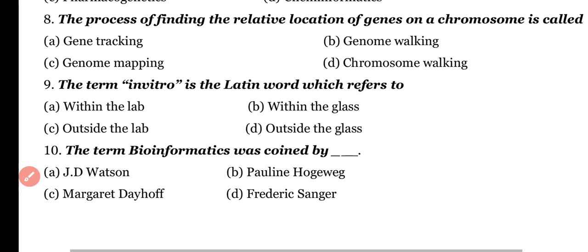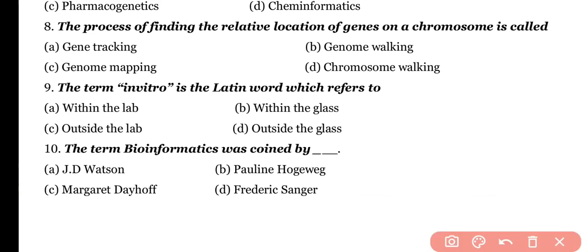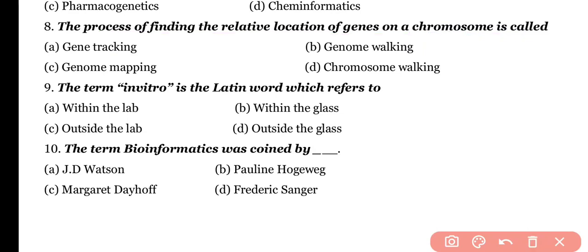Question number 8. The process of finding the relative location of genes on a chromosome is called: gene tracking, gene walking, genome mapping, or chromosome walking? Correct answer is option C.